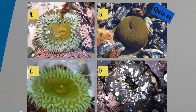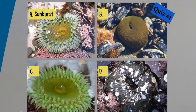We are now going to have a quiz to see if you're able to identify the differences between a sunburst anemone and a giant green anemone. So what's A? You guessed it — the sunburst anemone has those radiating lines on the oral disc.